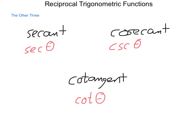The reason that these are referred to as reciprocal functions is because each one is the reciprocal of one of our main ones. Secant of theta is actually equal to 1 divided by the cosine of theta. Cosecant of theta is 1 divided by the sine of theta. And cotangent of theta is 1 divided by the tangent of theta.